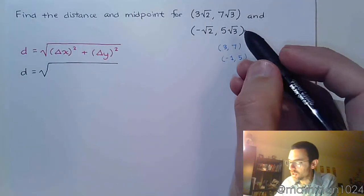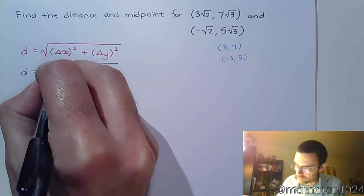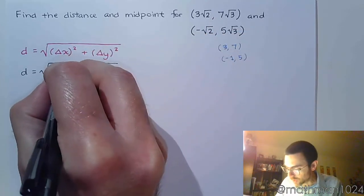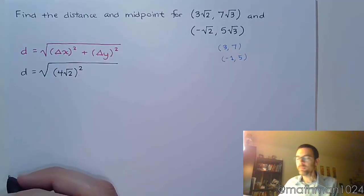So what's the change from 3 to negative 1? Well, the change there is 4, but since they're connected to square roots of 2, it's going to be 4 times the square root of 2.